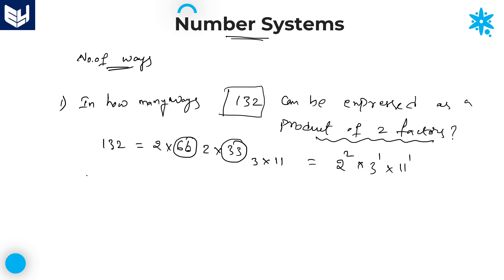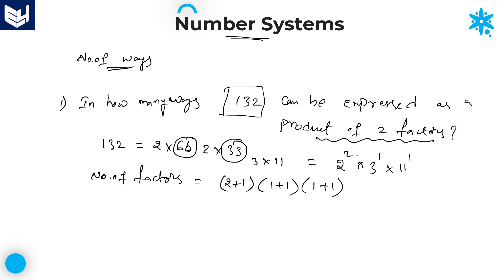The second step is number of factors. Once the prime factors are found, number of factors is very simple — adding 1 to the powers and then multiplying each other. Here the power values are 2, 1, and 1. So: (2+1) × (1+1) × (1+1) = 3 × 2 × 2 = 12. Therefore the number of factors for 132 is 12.